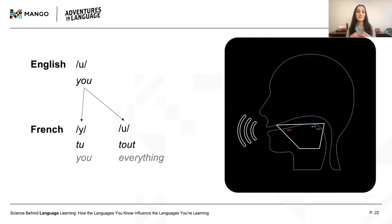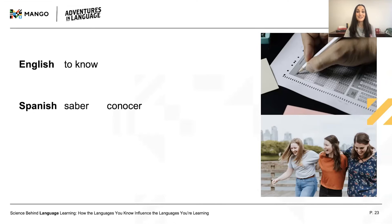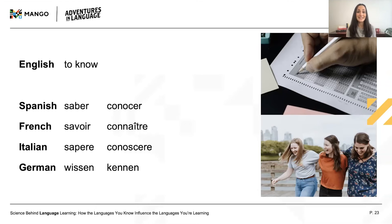Some researchers have proposed that the most difficult difference for learners occurs when the native language has a single form for something but the second language has multiple forms. For example, French has two high rounded vowels, as in 'qi' and 'tu.' English speakers perceive both of these sounds as the English 'u' and struggle to form two separate categories. Similarly, Spanish has two forms of the verb 'to know' — saber and conocer — and English-speaking learners have a very difficult time learning their appropriate uses. However, both forms exist in other languages like French, Italian, and German, so this doesn't pose a challenge for speakers of those languages.